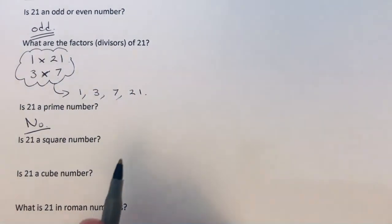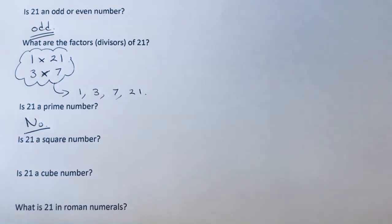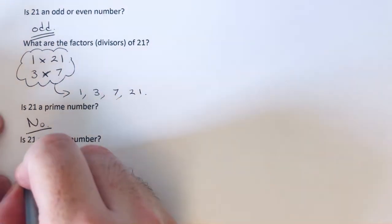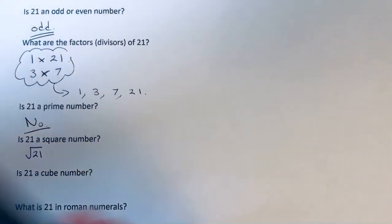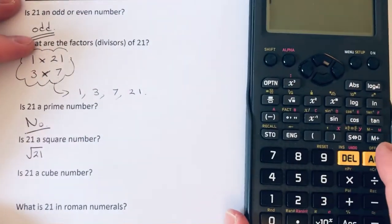Our next question: is 21 a square number? Well, if it's a square number, we should be able to square root 21 to give a whole number. Let's check that on the calculator.